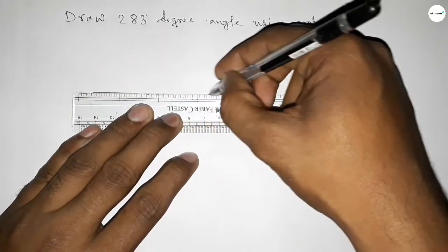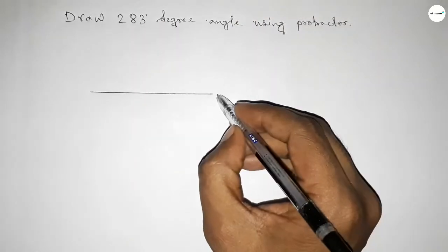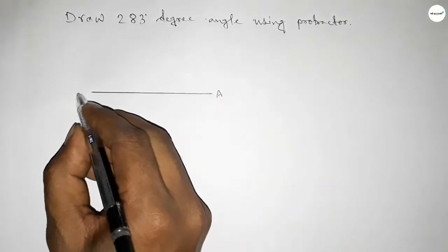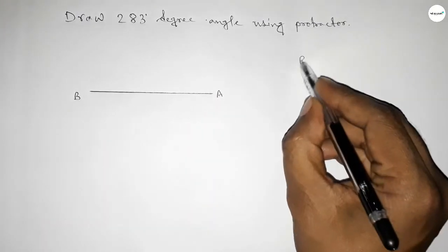First of all, we have to draw a straight line of any length. Next, taking here an A point and this end B point.